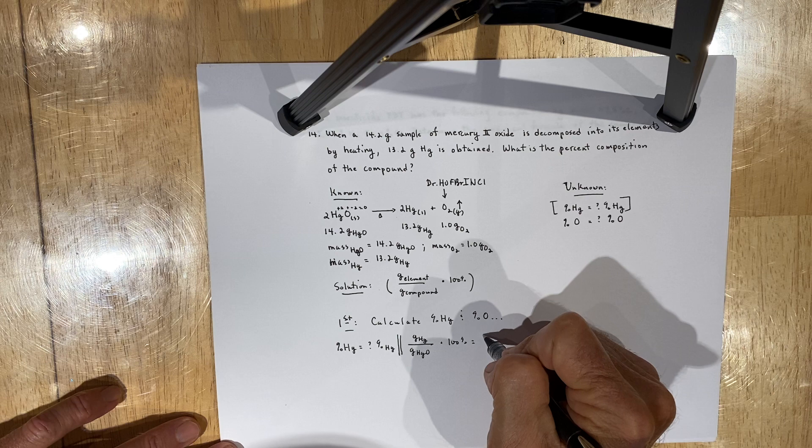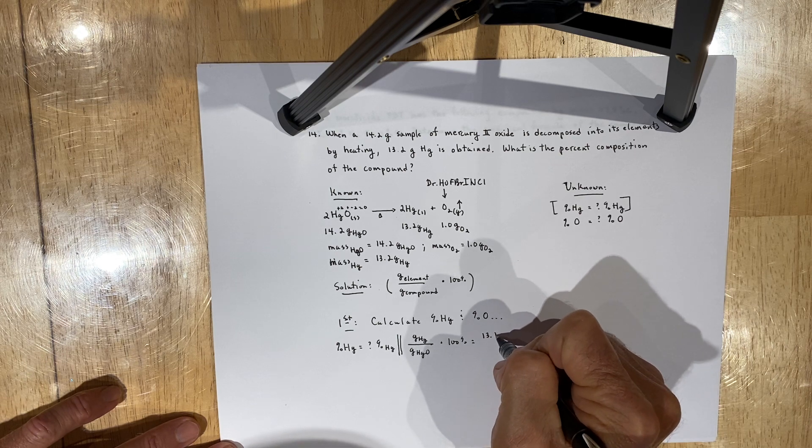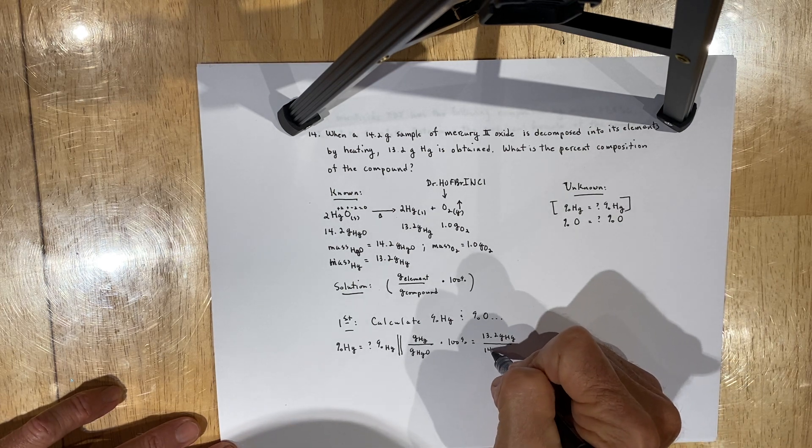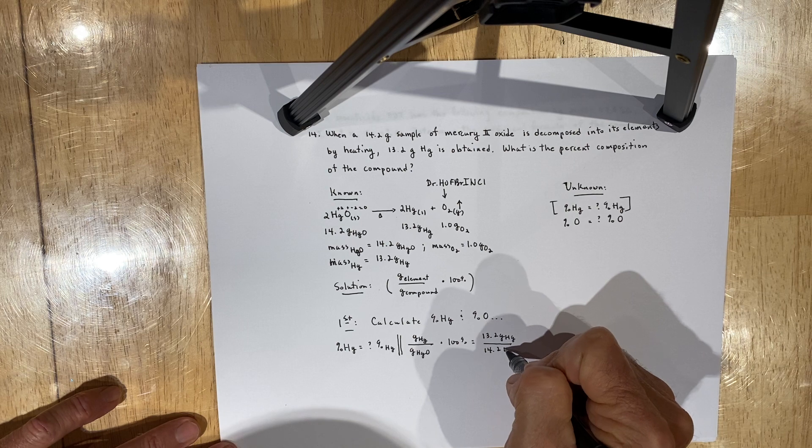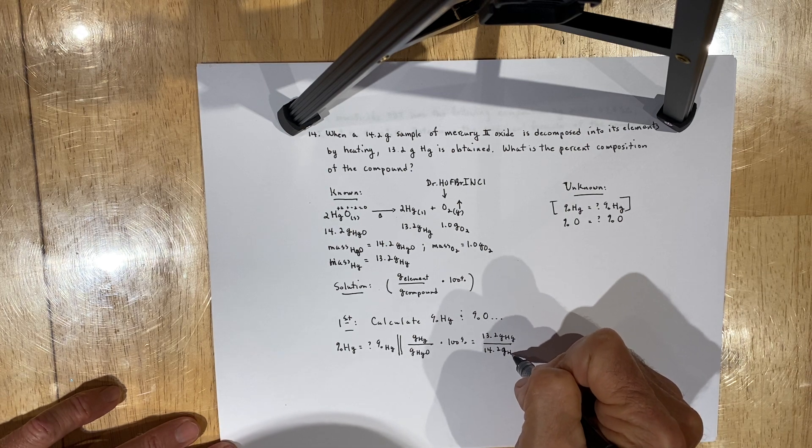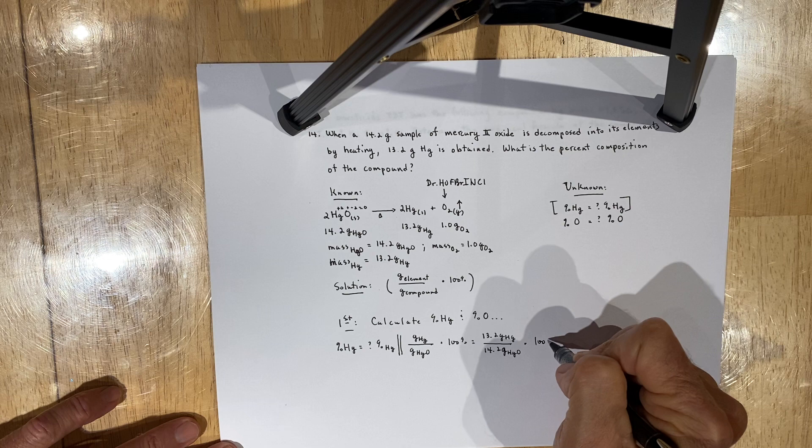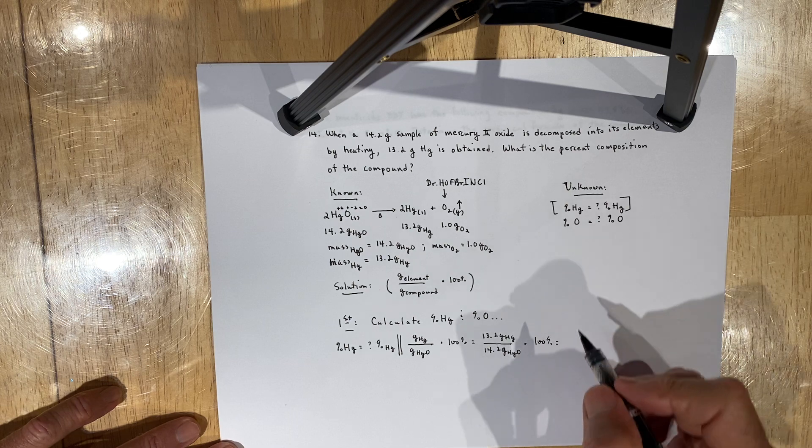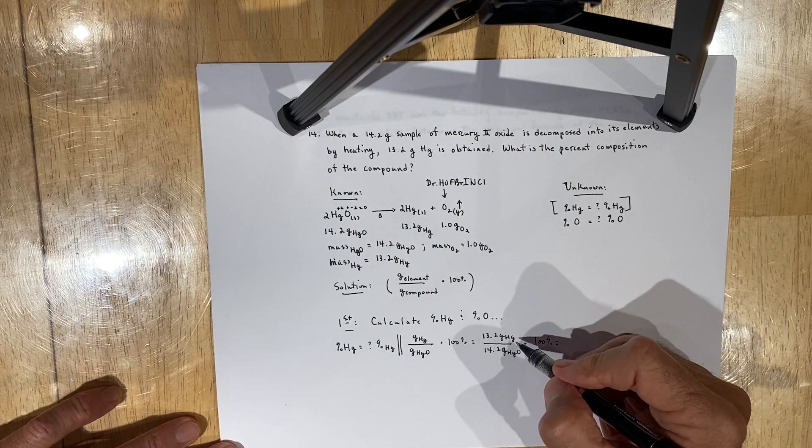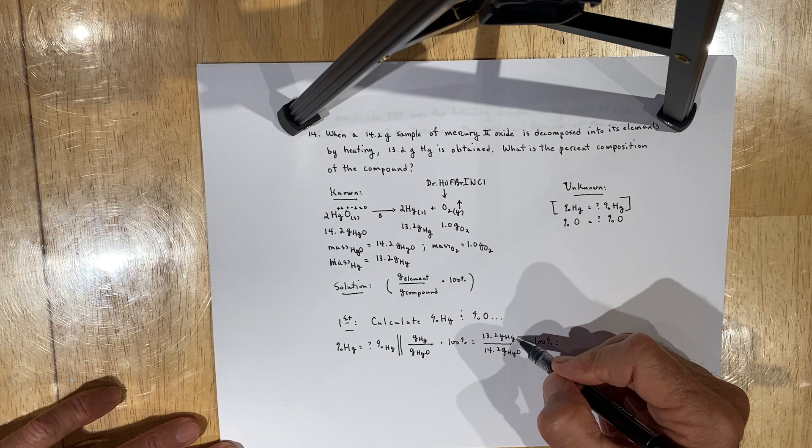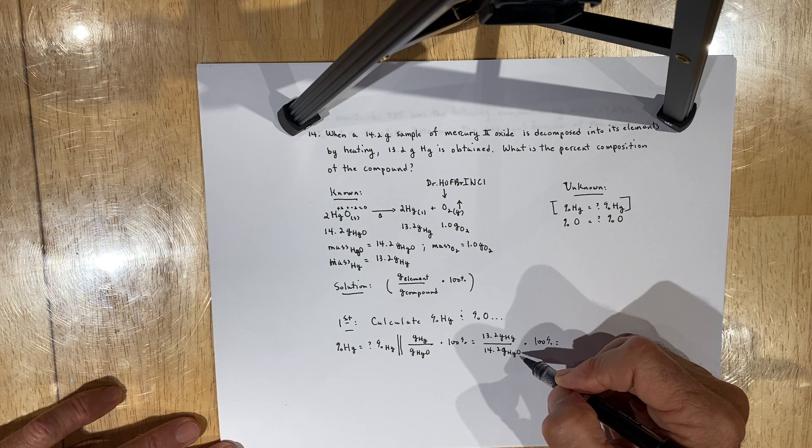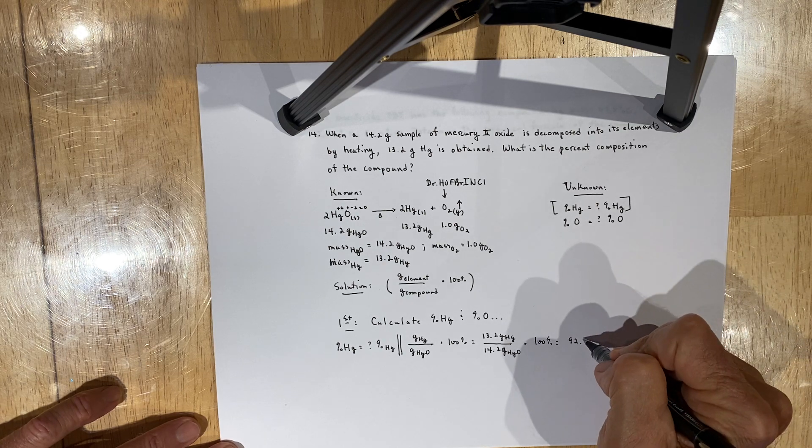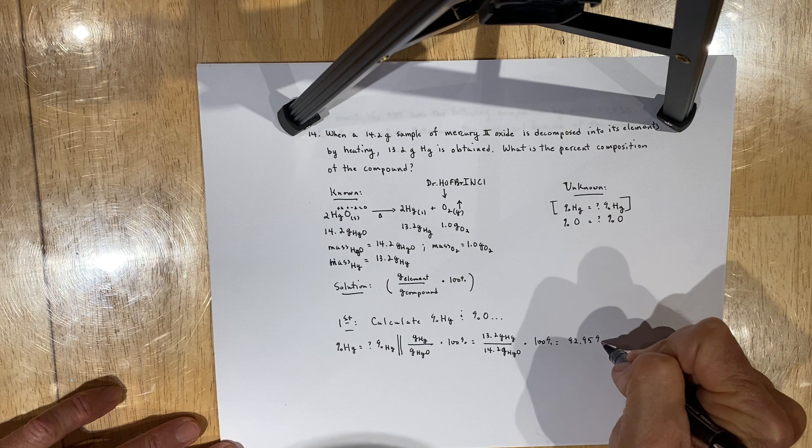And we're going to divide the mass of mercury by the mass of mercury oxide times 100%. The mass of mercury is 13.2 grams, as we've been given in the problem. And the mass of mercury oxide is 14.2 grams of mercury oxide times 100%. When you process this calculation, bear in mind that what you're really taking into account is the mass of mercury relative to the total mass of the compound. The value that you get is 92.95% mercury.